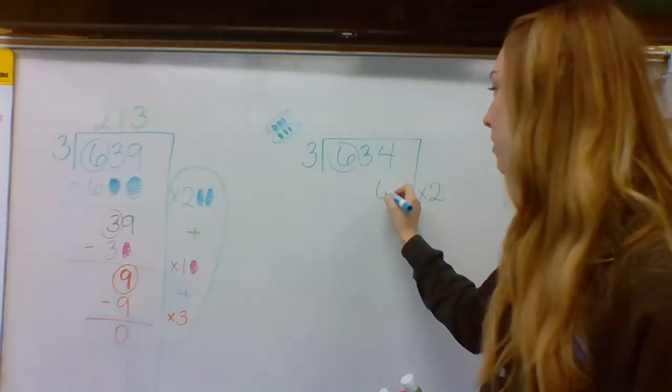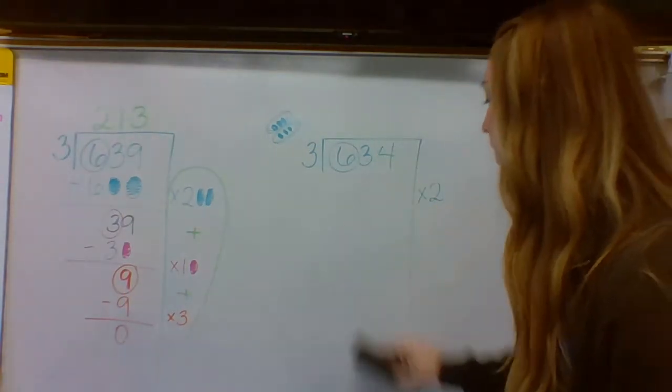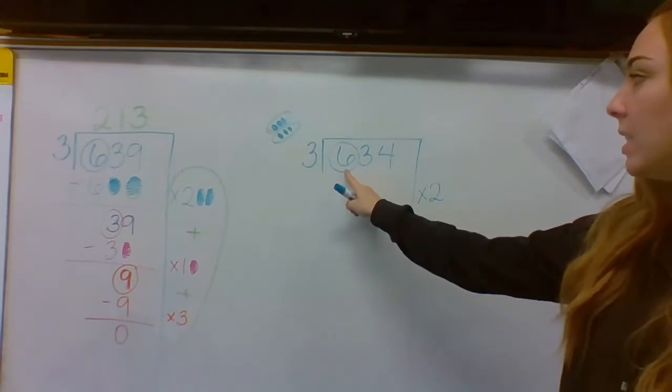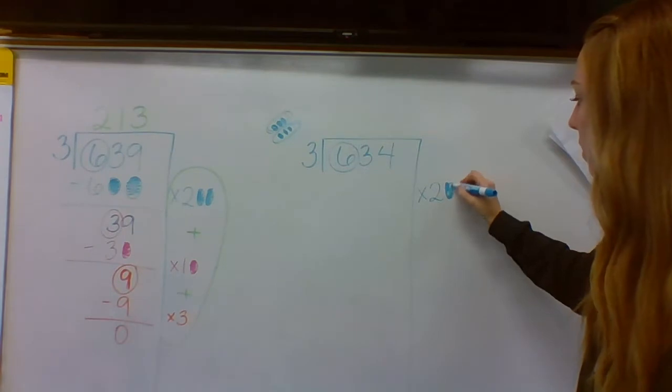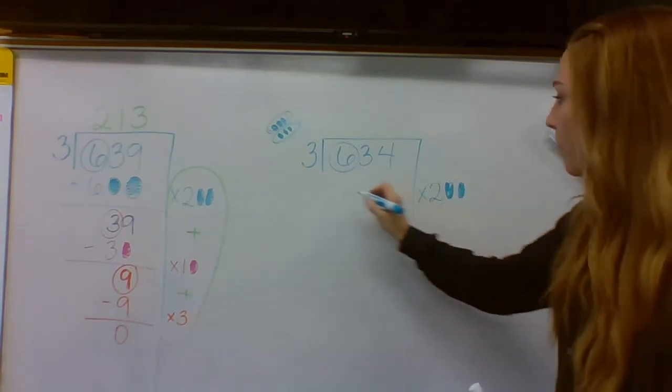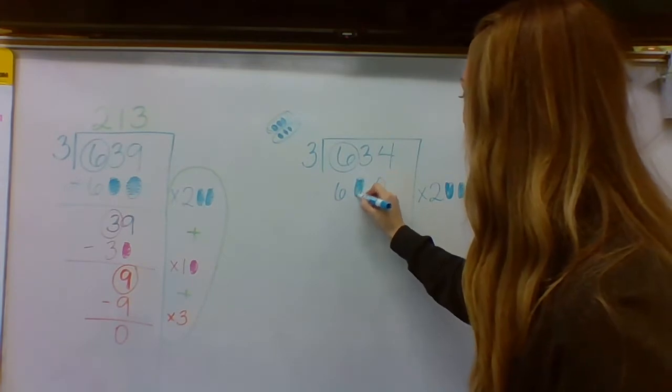But I don't want to just subtract six, remember, because that would take a really long time if I subtracted six that many times. I know that this is a six with two numbers after it. Six hundred. So I'm going to add two zeros. That way I cannot take away six. I can take away six hundred.